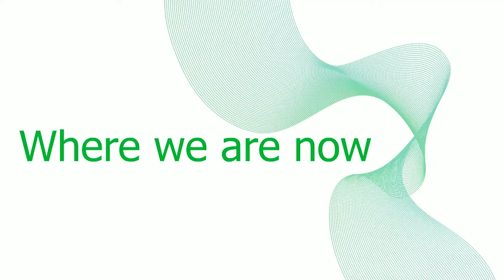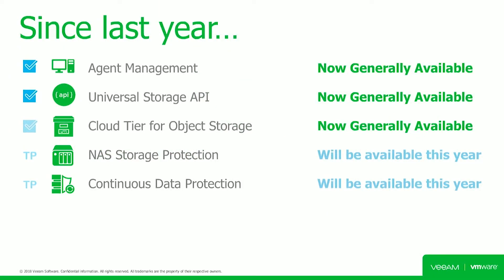Where we are now is we've gained agent management capabilities — that was fulfilled in previous updates — and a universal storage API. What that basically means is that we put out a storage API set so that storage vendors would have the capability of integrating themselves into our platform. We as Veeam still perform quality assurance and quality control to make sure it's up to our standards, but more storage integration is happening today with our product set. With the latest Update 4, we released a cloud tier for object storage. Coming in version 10 later this year is NAS storage protection support — protecting CIFS and NFS — as well as continuous data protection, getting replication down to the seconds.